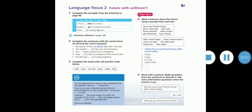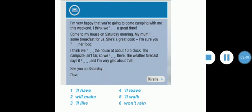Exercise number three: we have an email. We're going to complete this email with will or won't, using these verbs from the beginning. I'm very happy that you're going to come camping with me this weekend. I think we will have a great time. Come to my house on Saturday morning. My mom will make some breakfast for us. She's a great cook. I'm sure you will like her food. I think we will leave the house at about 10 o'clock. The campsite isn't far, so we will walk there. The weather forecast says it won't rain and I'm very glad about that. See you on Saturday, Dave.